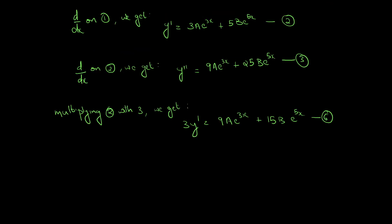Subtracting equation 6 from equation 3: equation 3 minus equation 6 gives y double dash minus 3y dash equal to — the 9a e raised to 3x term cancels — 25 minus 15, which is 10b e raised to 5x.